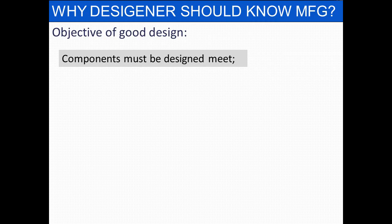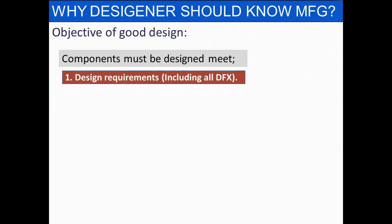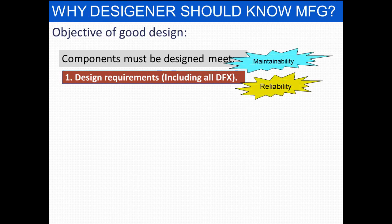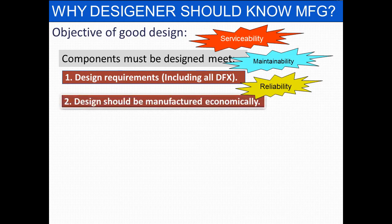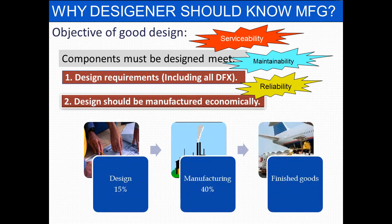The objective of any good design is that components must be designed to meet design requirements, including all DFX's like maintainability, reliability, and serviceability. The second important factor is that design should be manufactured economically — that is, from art level to part level, it should be manufactured economically. Let's understand why. Look at this spread of budgeted cost distribution: at the design level, only 15 percent of the budgeted cost is spent, and at the manufacturing level, 40 percent of the budgeted cost of the product is spent.